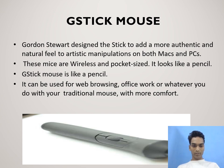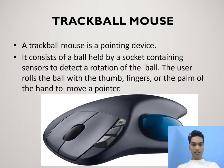Trackball mouse: a trackball mouse is a ball pointing device. It consists of a ball held by a socket containing sensors to detect the rotation of the ball. The user rolls the ball with the thumb, finger, or the palm of the hand to move the pointer.